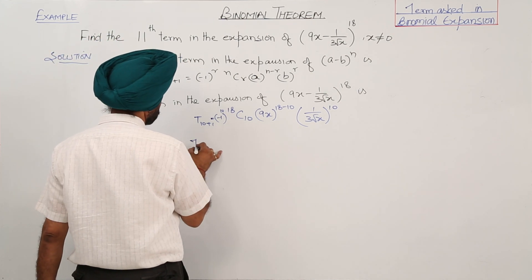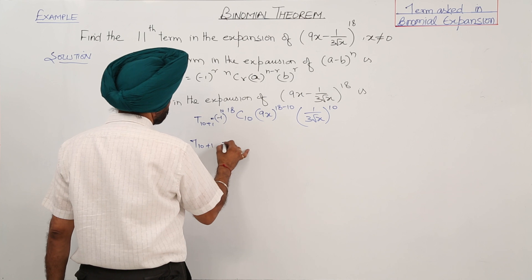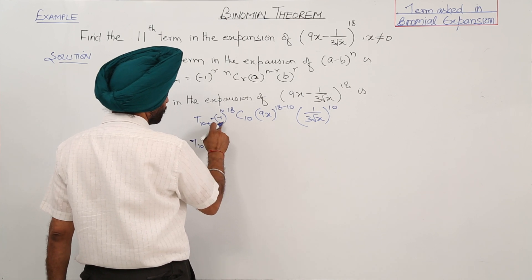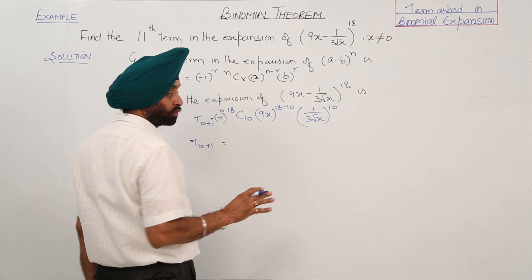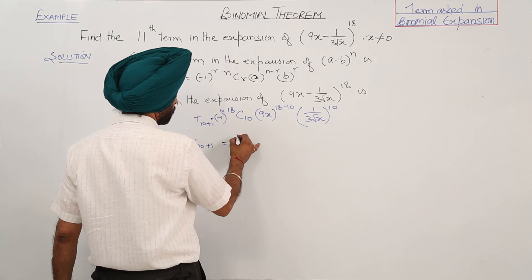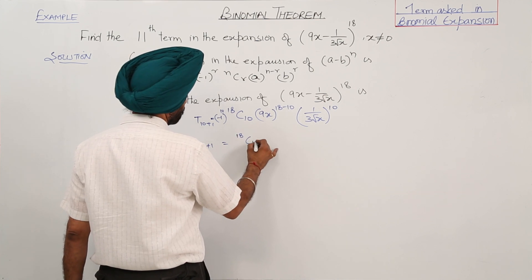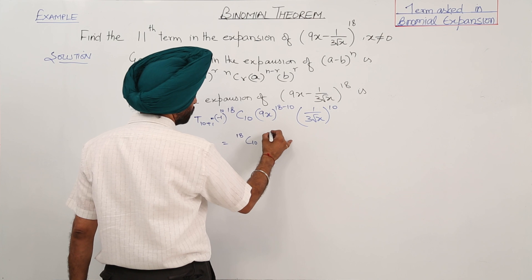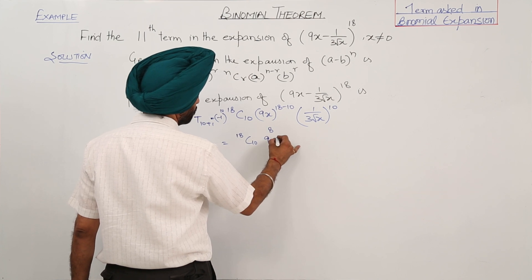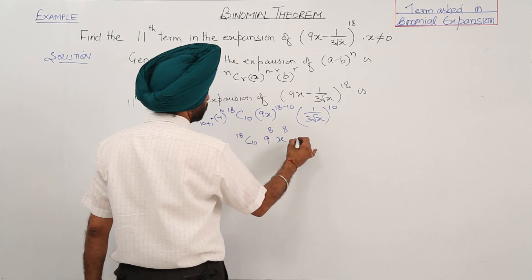So now this becomes: (-1) raised to power 10 is positive. So we are left with 18C10 times 9 raised to power 8 times x raised to power 8.